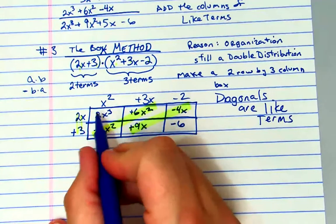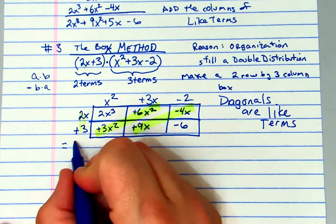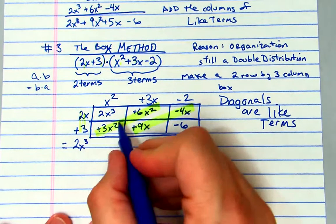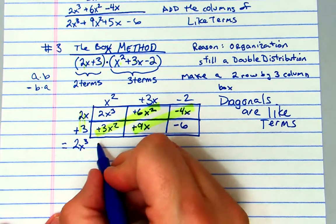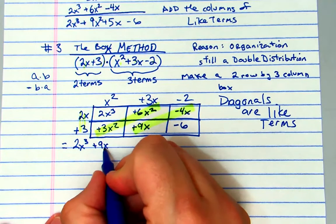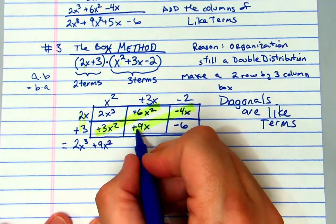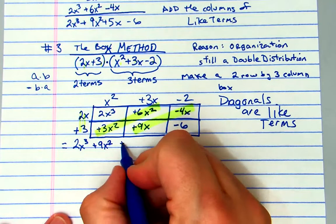So the diagonals are like terms. Is there a like term for 2x cubed? No, so I'm going to just say 2x cubed. I have 3x squared plus 6x squared, that's 9x squared. Nine minus four, that's plus 5x, and then I have negative 6. Now I'm done.